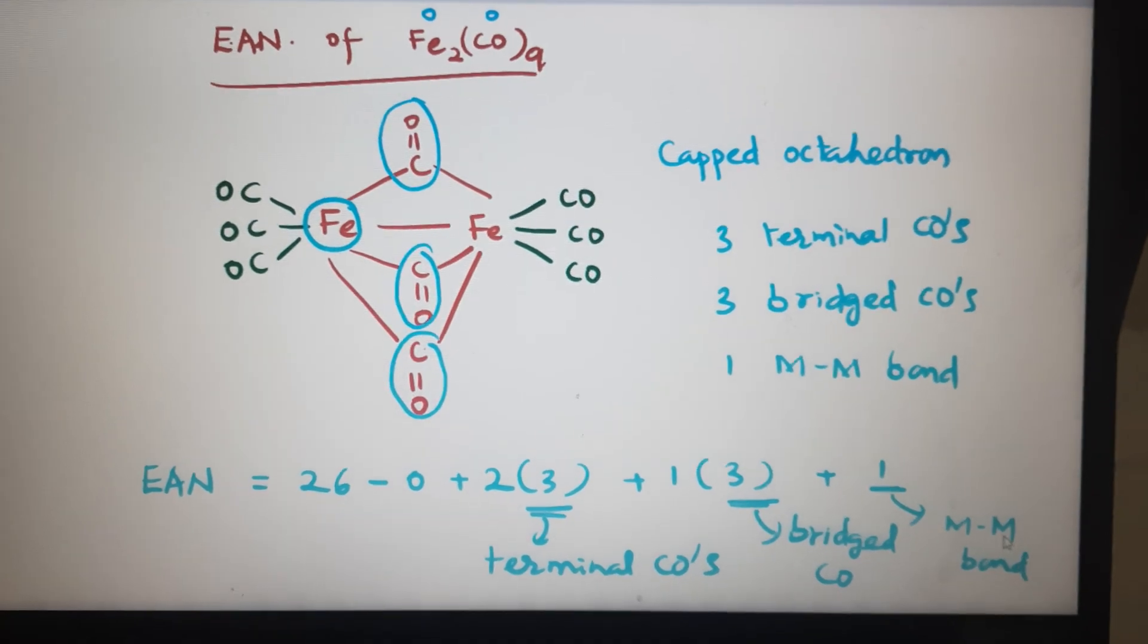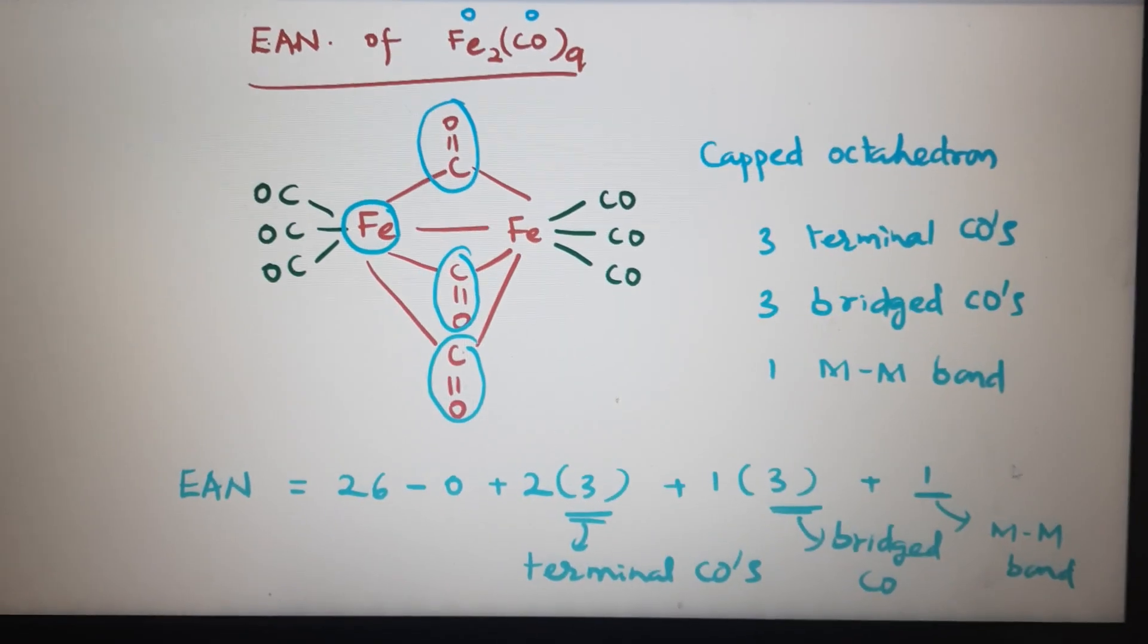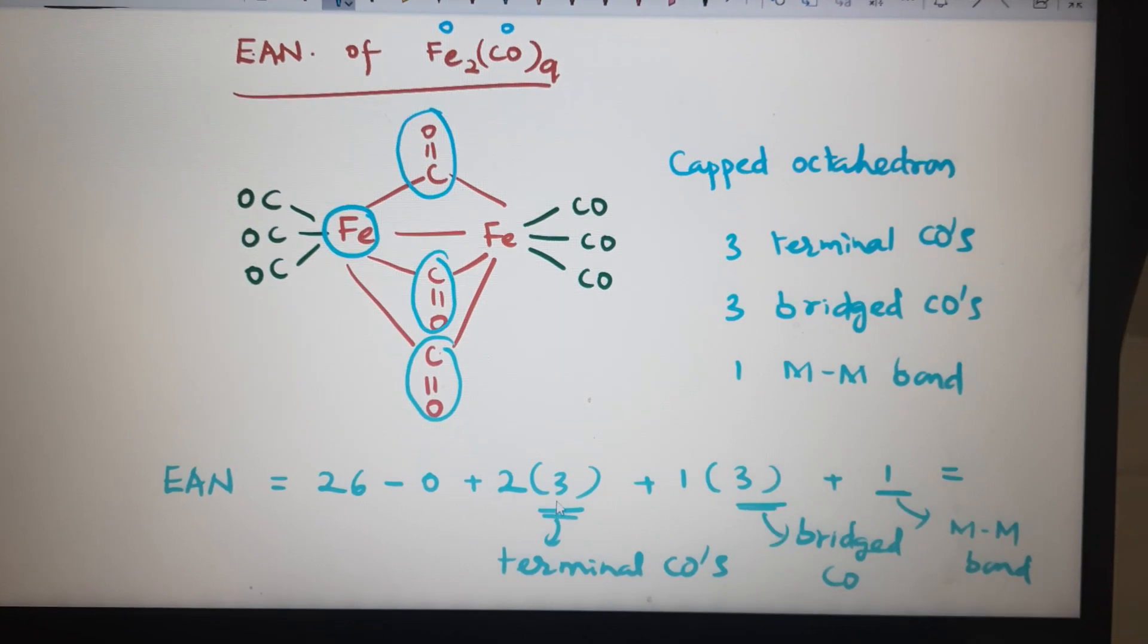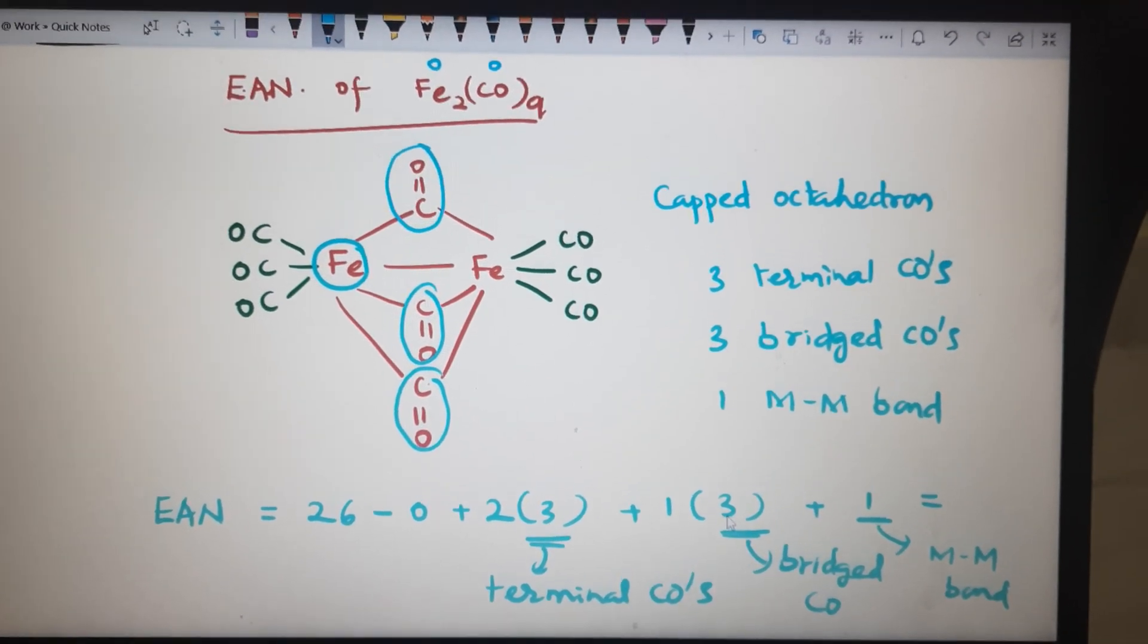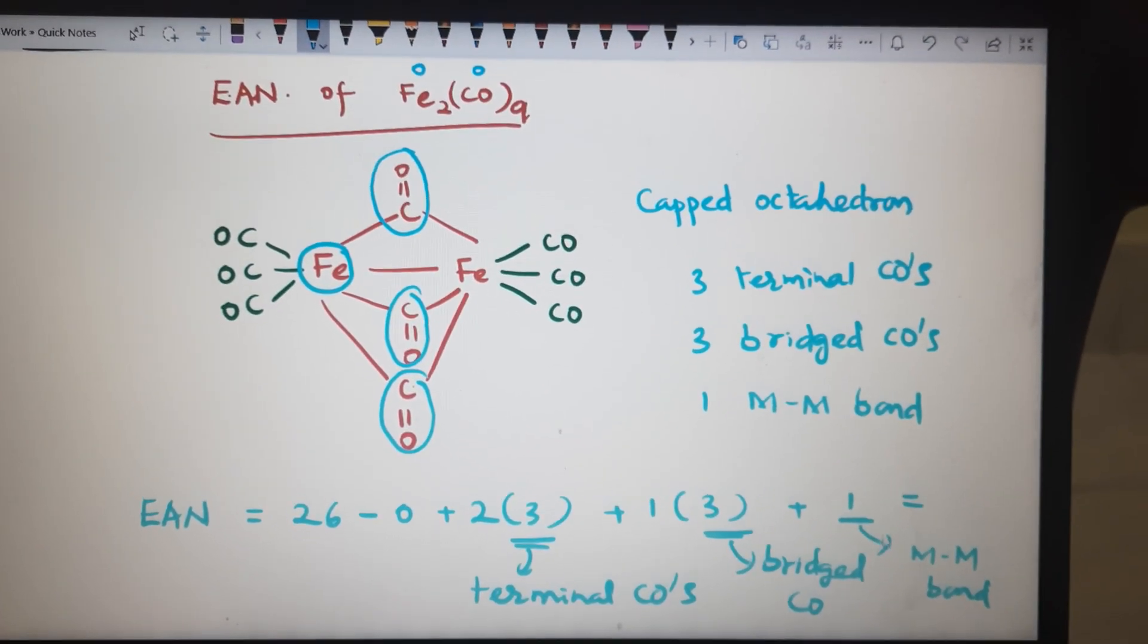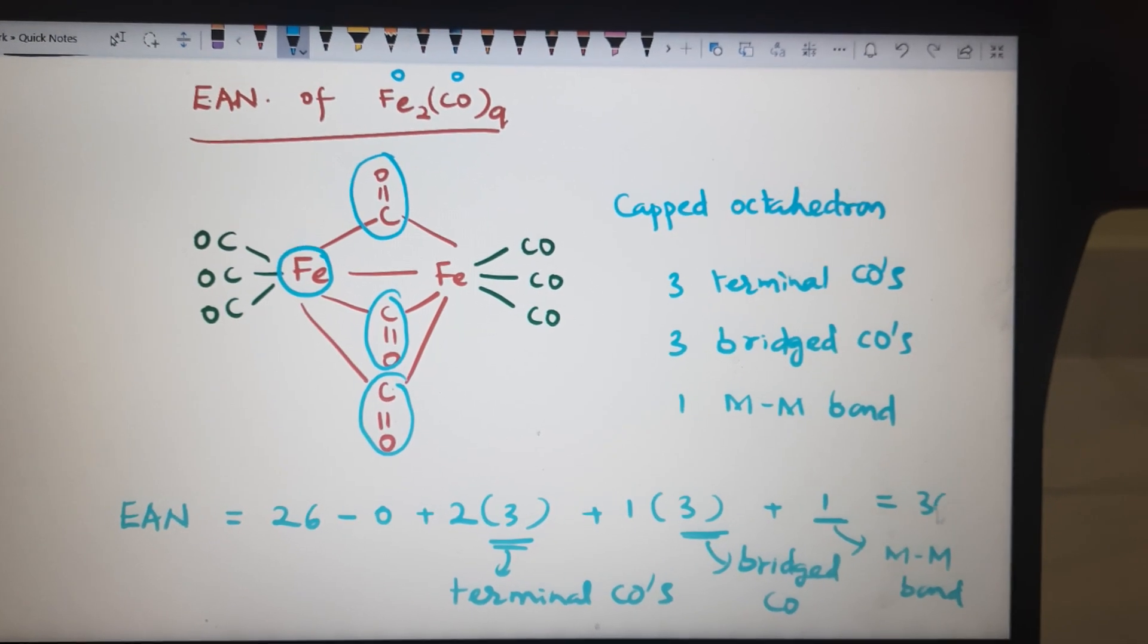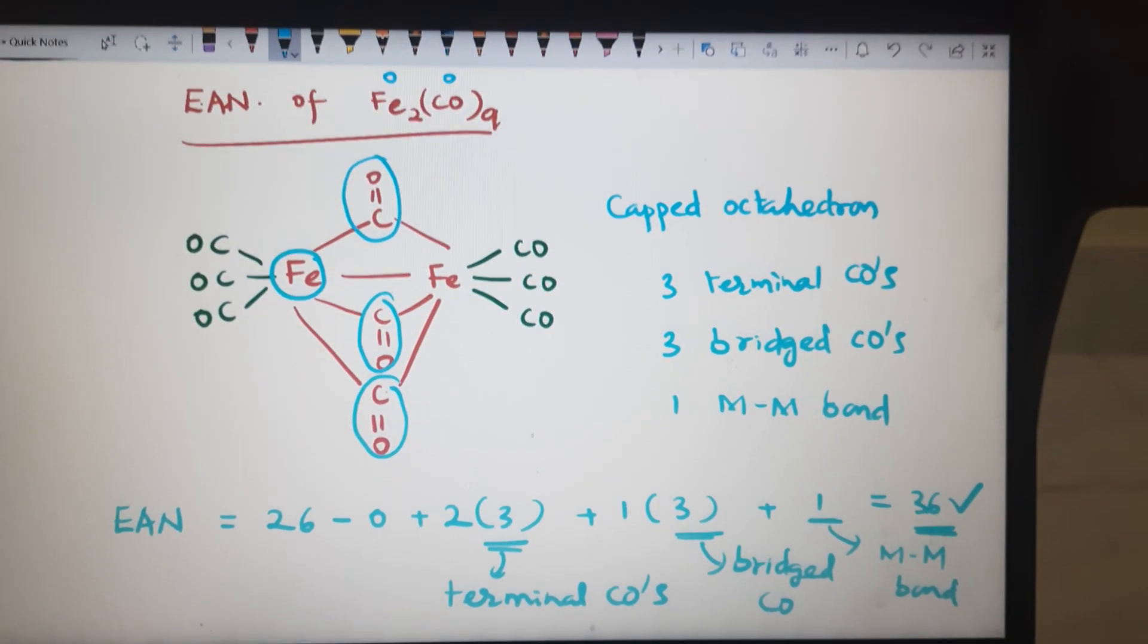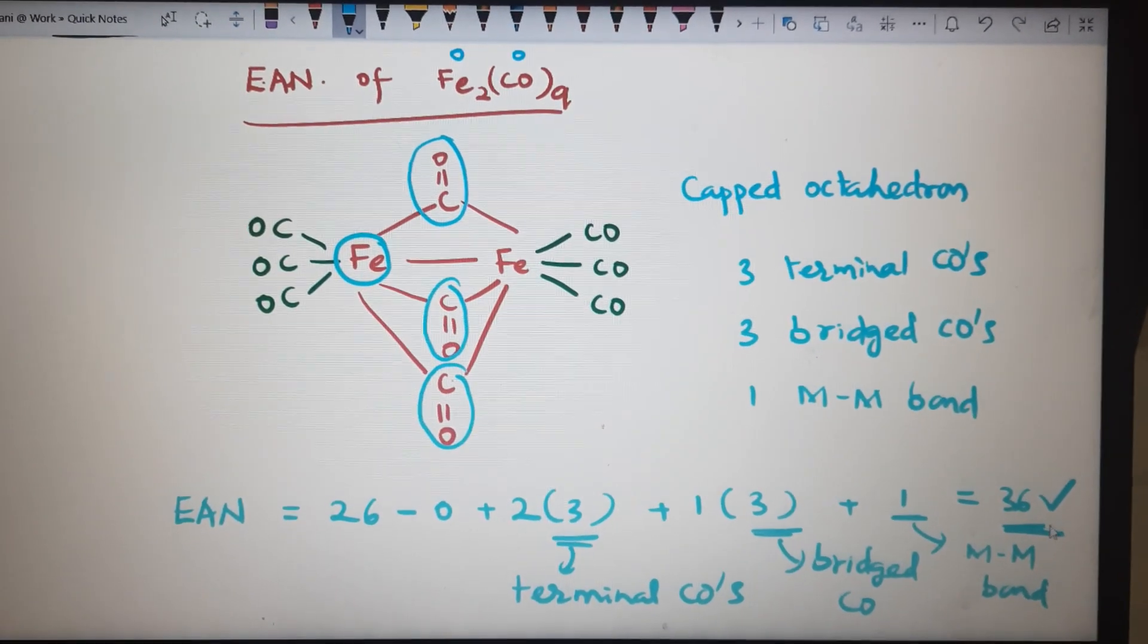So the final answer is 26 plus 6, 3, 1, total 36. Following EAN rule, following EAN rule.